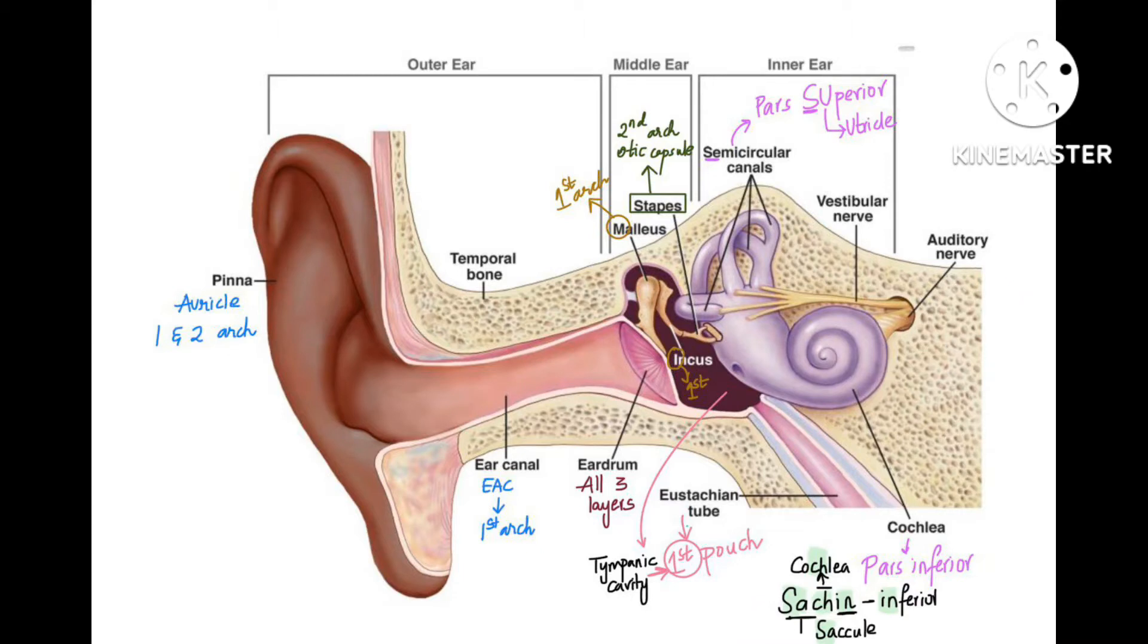In outer ear the two parts are ear pinna and external auditory canal or external auditory meatus. Pinna, otherwise called auricle, is derived from first and second arches, whereas ear canal is from only first arch.